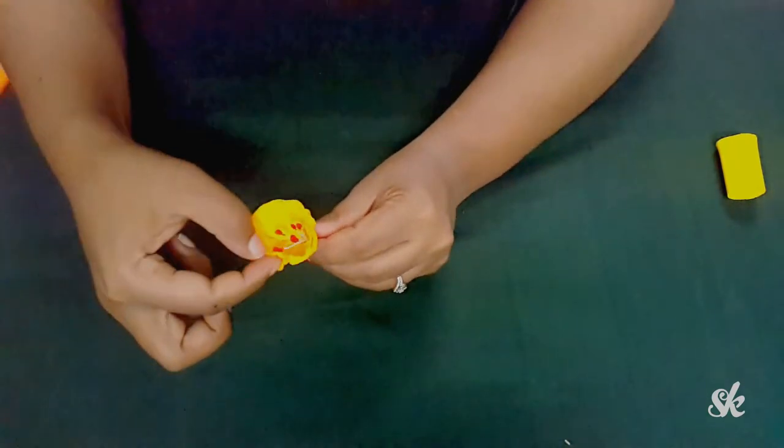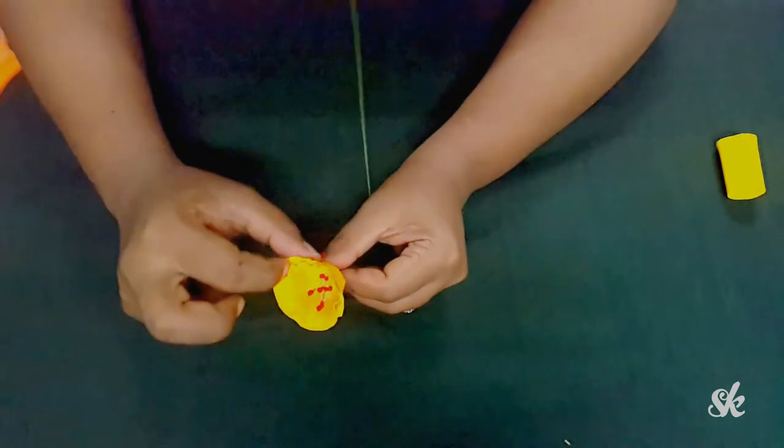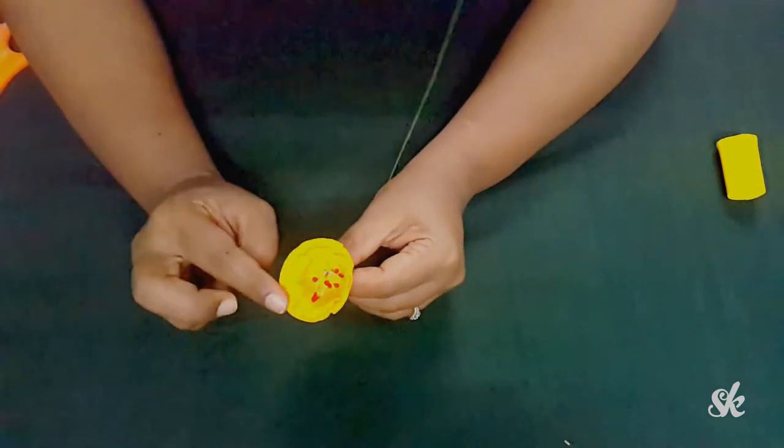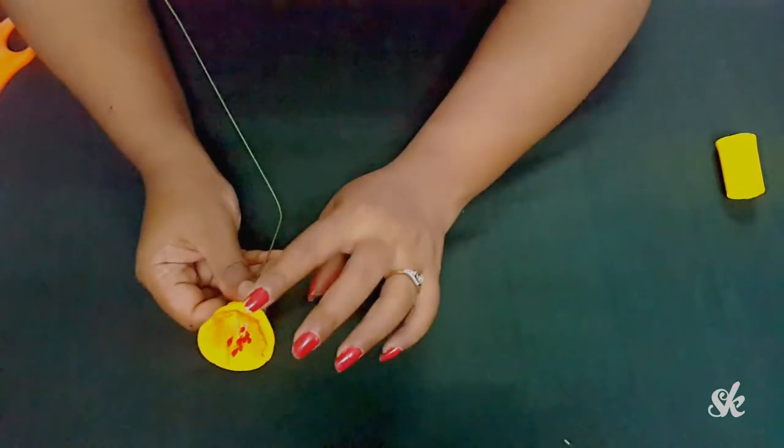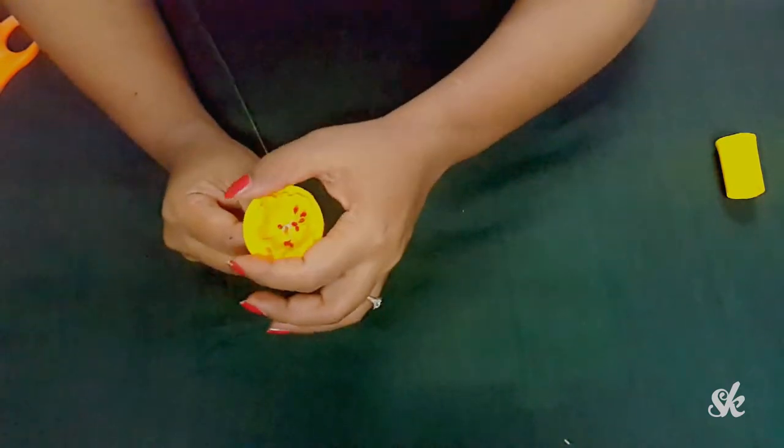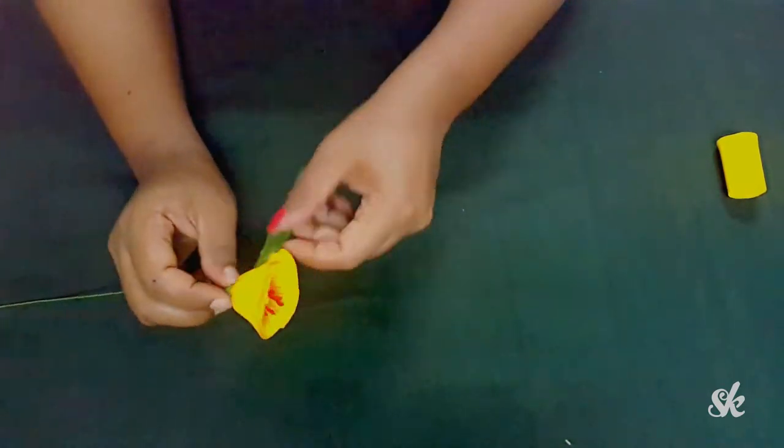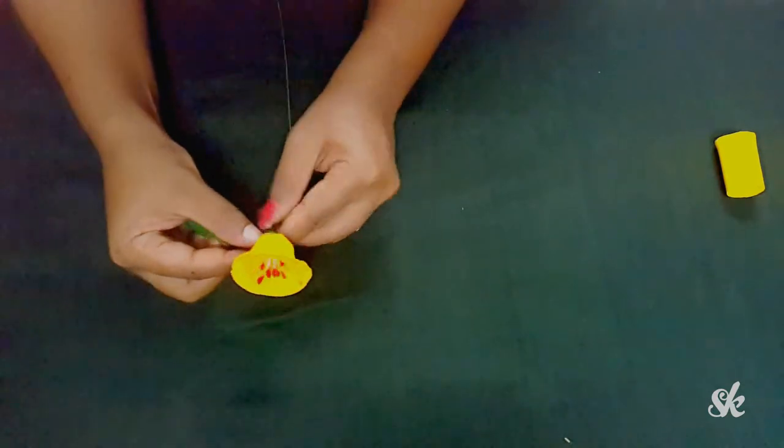Once done, just run your fingers between the two edges to make the frills more heavy and attractive. Now wrap the base of your flower with the green tape tightly.